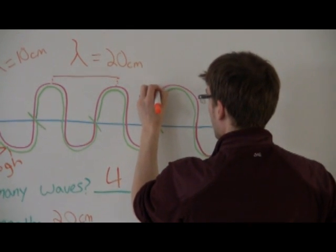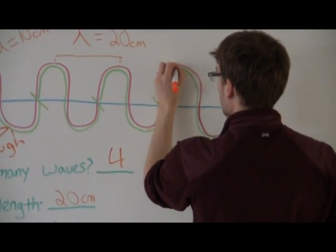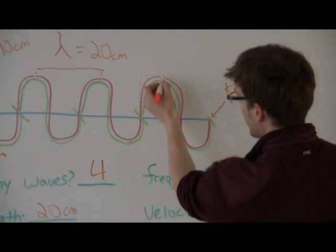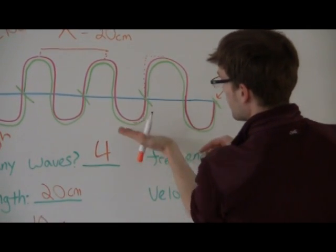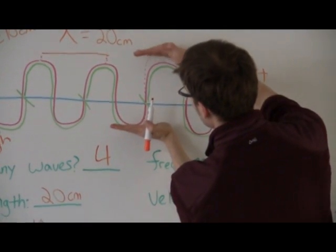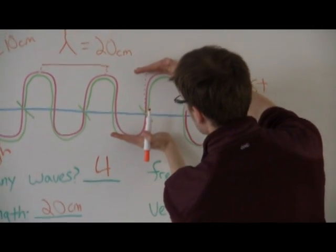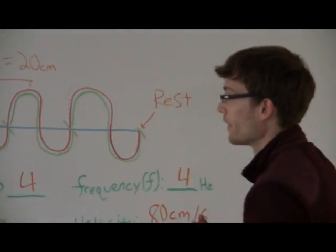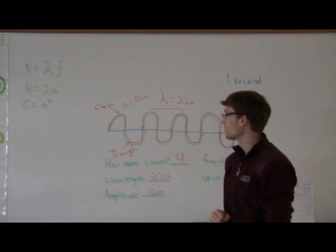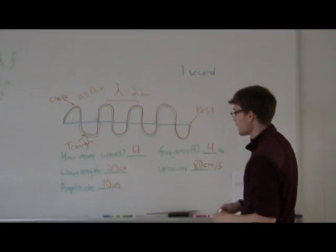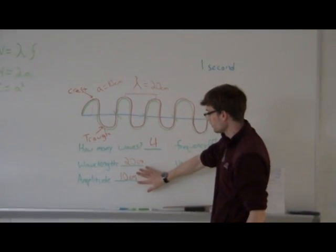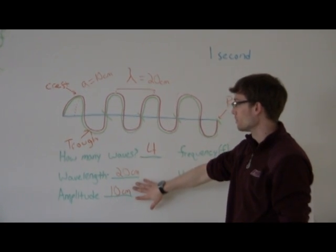And the top of the crest. It doesn't go diagonally. That would be a different distance. It's just the distance between these two points. So how do we find that? It says it's two times the amplitude. All right, so all you have to do is take the amplitude, 10 centimeters, and multiply it by two.